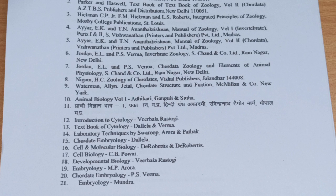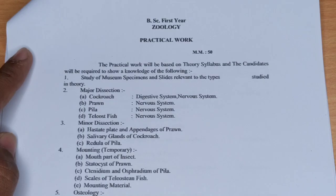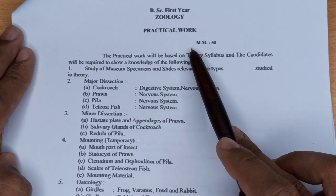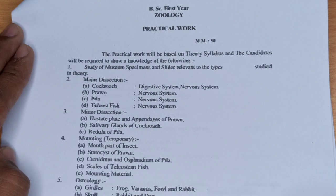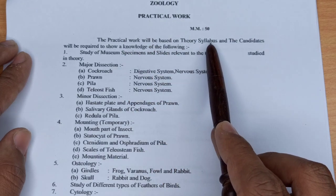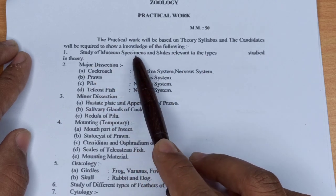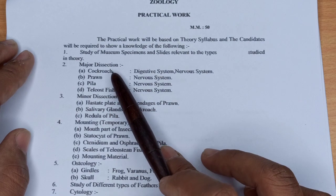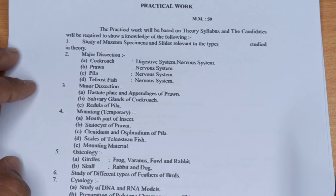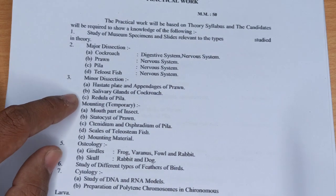Botany के syllabus से पहले Zoology का practical work बता देते हैं। Practical work theory syllabus पर based होगा। सबसे पहले study of museum specimens and slides relevant to types studied in theory। Major dissection में Cockroach, Prawn, Pila और Teleost Fish हैं। Minor dissection में hesitate plate and appendages of prawns, salivary gland of cockroach और radula of Pila हैं।